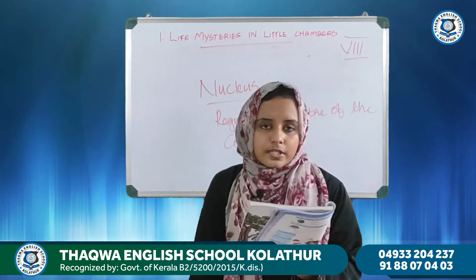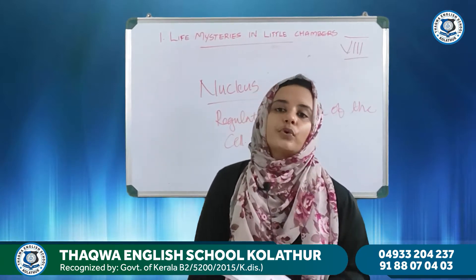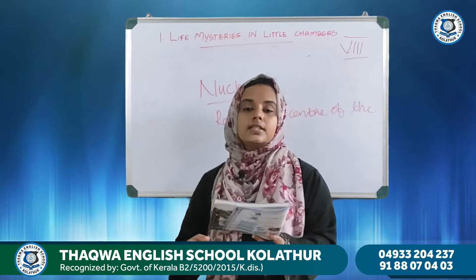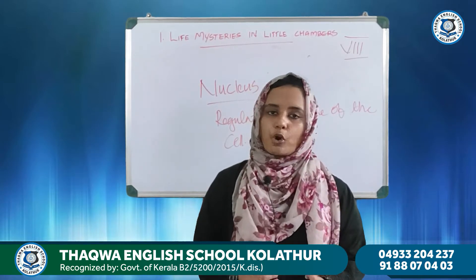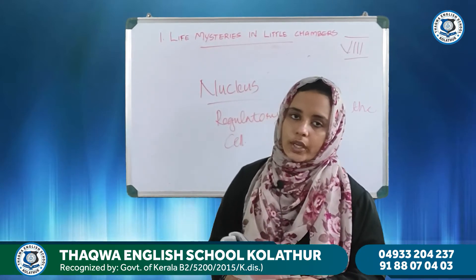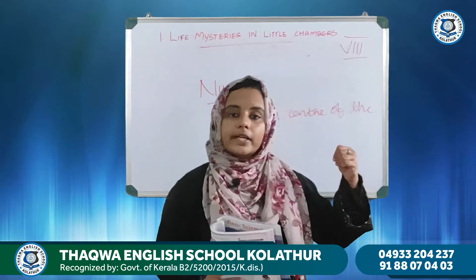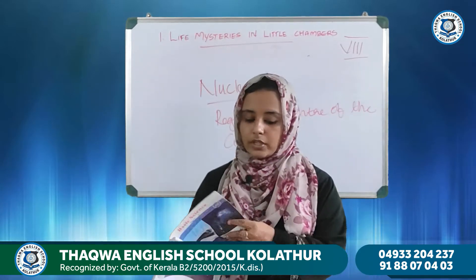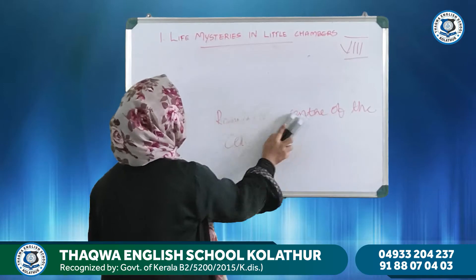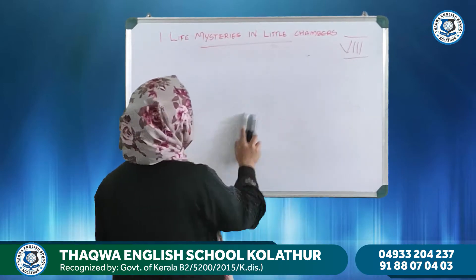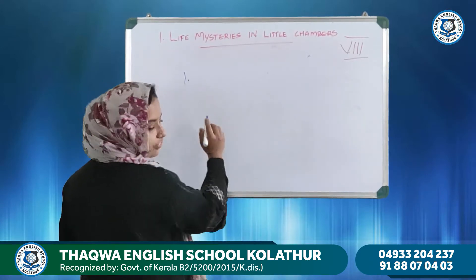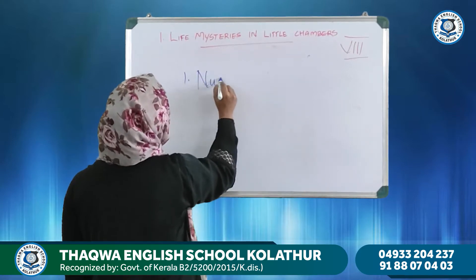The synthesis of proteins is controlled by genes in the chromatin reticulum. That's why the nucleus is called the regulatory center of the cell. Next, we will identify the different parts of the nucleus and their functions. There are five parts.